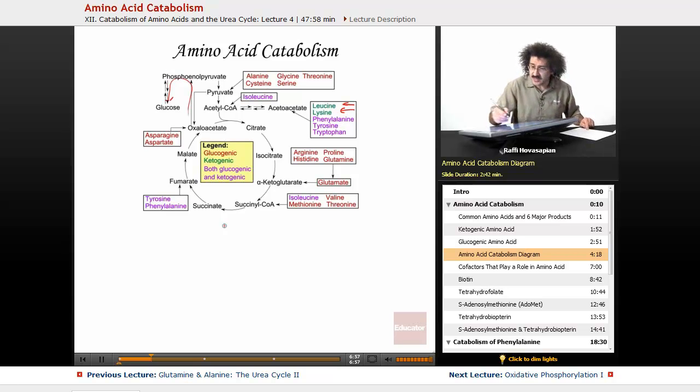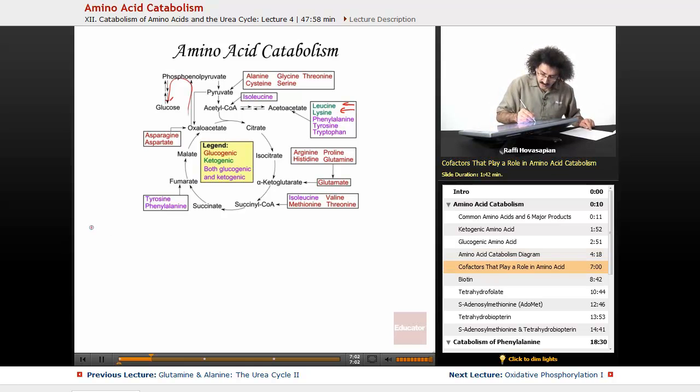So let's go ahead and list some of these. Let me go ahead and stay with red. So cofactors that play a role in amino acid catabolism.